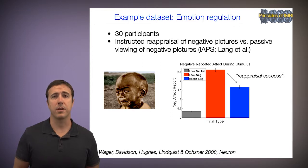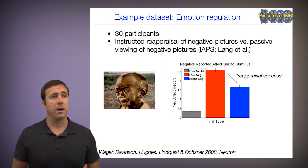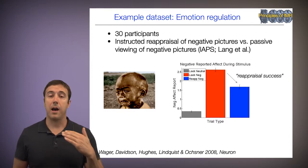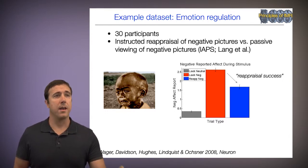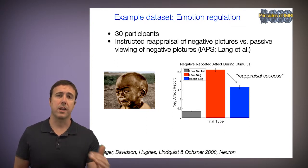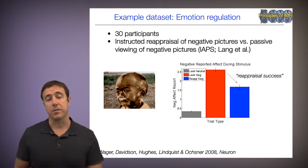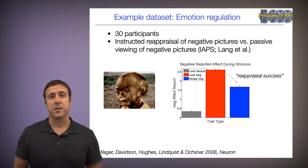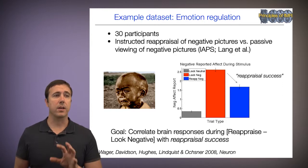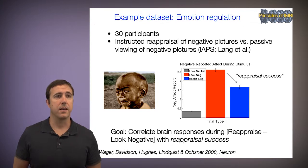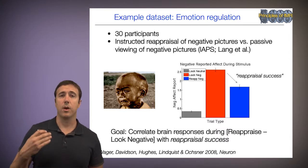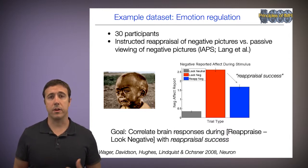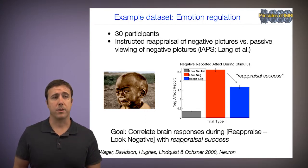People also looked at neutral images. Negative emotion is low when looking at neutral images, high when looking at aversive or negative images (shown in red), and it gets better when they're reappraising (shown in blue). The difference for a person between looking at the negative image and reappraising it is what we define as reappraisal success. We're interested in looking at the brain correlates of reappraisal success, specifically brain activity during the contrast reappraise versus look negative, and whether increases in activity during reappraisal are predictive of how successful a person will be.